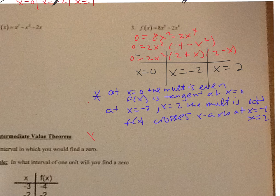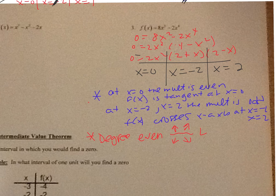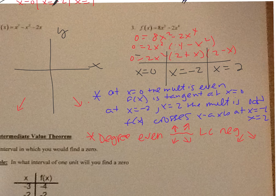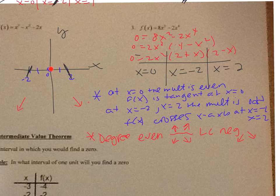For the leading coefficient test: the degree is 4, which is even — goes up-up or down-down. The leading coefficient is negative 2, so it goes down-down. Drawing the picture: zeros at 0, 2, and negative 2. At 0 it's tangent; at negative 2 and 2 it crosses. Coming down in quadrant 3, it crosses at negative 2 going up. On the right, coming down it crosses at 2. Getting from there to here being tangent at 0, the graph has to be concave up in the middle. The sketch looks like that.